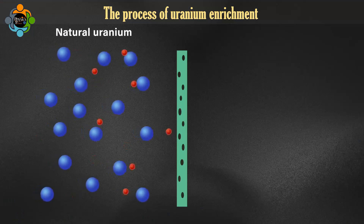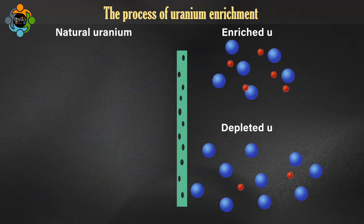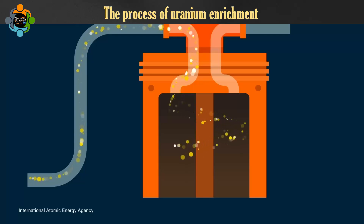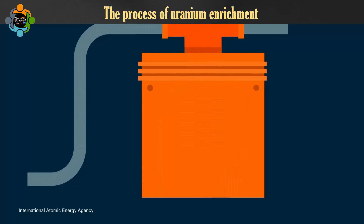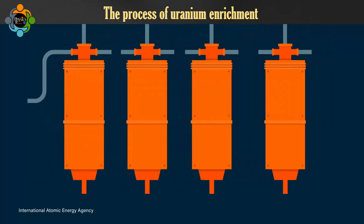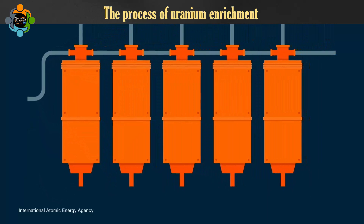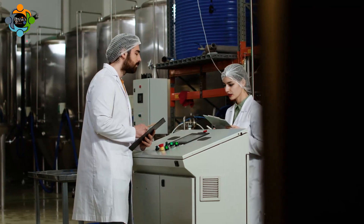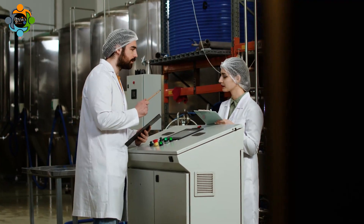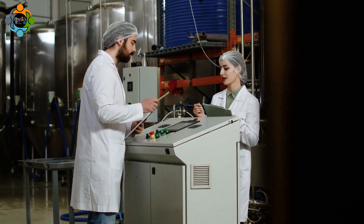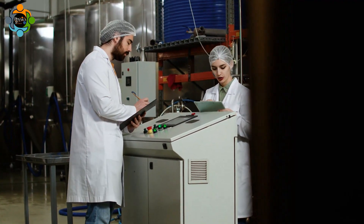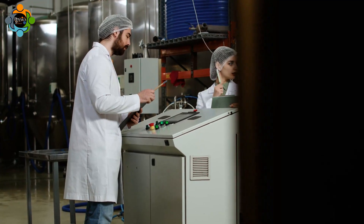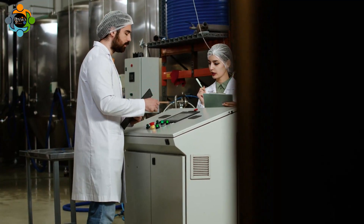This creates a slight difference in concentration, with more uranium-235 near the center. By repeating this process thousands of times in cascades of centrifuges, we can gradually increase the percentage of uranium-235 from less than 1 percent to around 3 to 5 percent for nuclear reactors, or much higher for weapons.